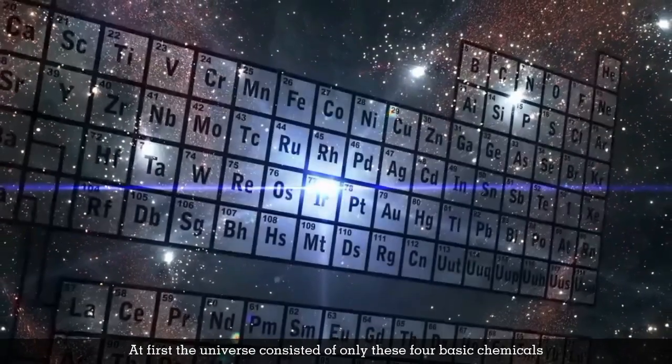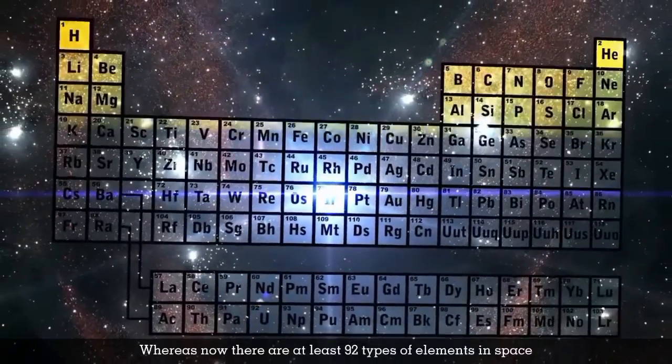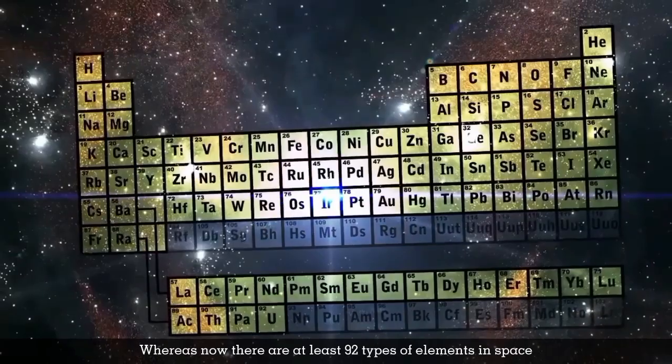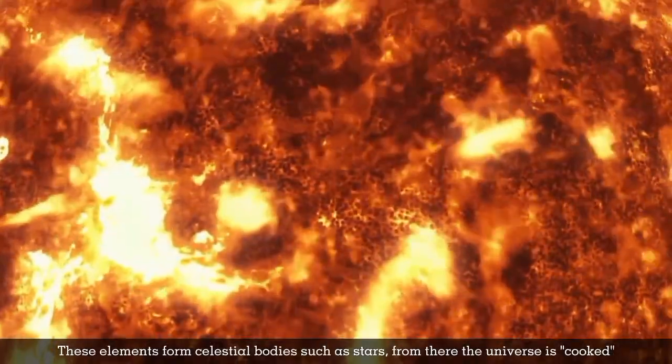At first, the universe consisted of only these four basic chemicals. Whereas now, there are at least 92 types of elements in space. These elements form celestial bodies such as stars. From there, the universe is cooked.